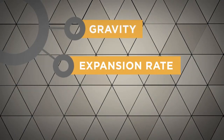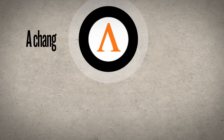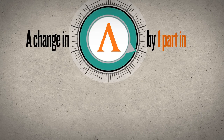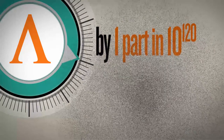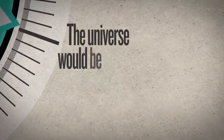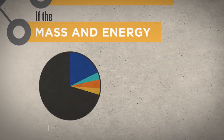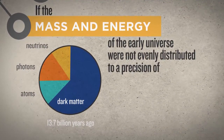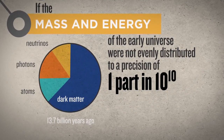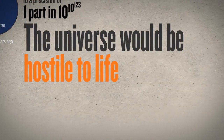Or consider the expansion rate of the universe, driven by the cosmological constant. A change in its value by a mere one part in 10 to the 120th parts would cause the universe to expand too rapidly or too slowly — in either case, life-prohibiting. Another example of fine-tuning: if the mass and energy of the early universe were not evenly distributed to a precision of 1 part in 10 to the 10 to the 123rd, the universe would be hostile to life of any kind.